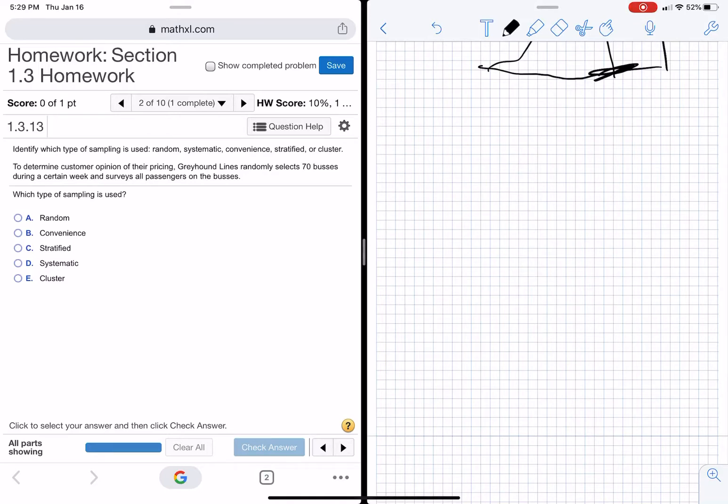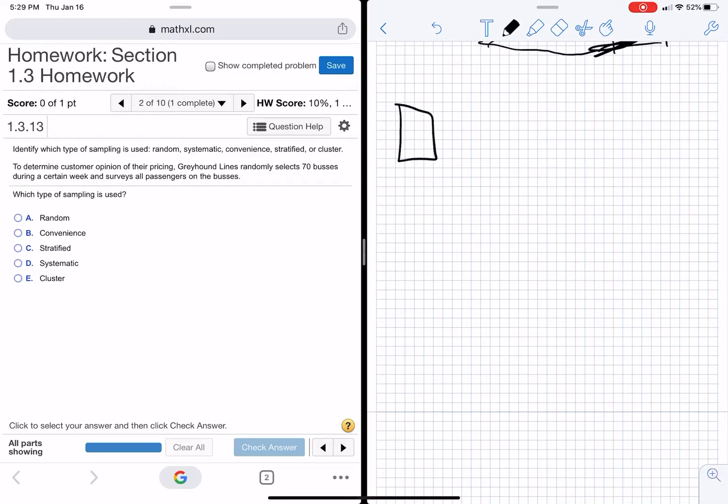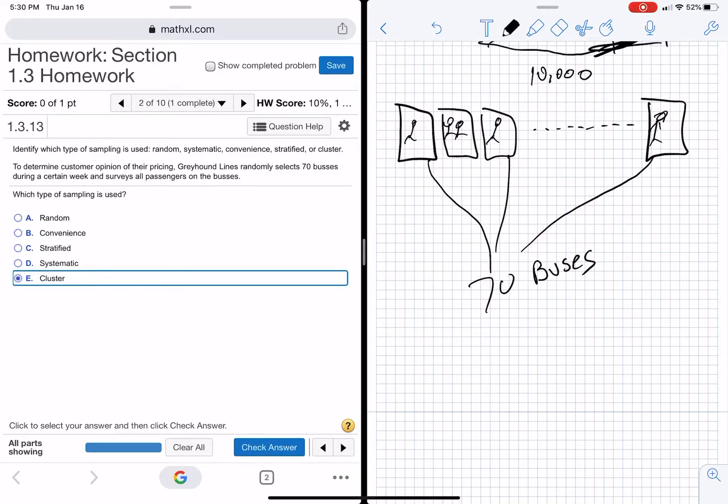Okay, they randomly select 70 buses during a week and survey all passengers on the buses. Okay, so you have to kind of think about this. Pictures sometimes help too. So this would be like bus 1, gray line. So all these are buses. Now, you don't know how many buses they have, but there's a lot of buses, and there's people on each of these buses, you know, multiple people. So what we did is, let's just say they have like 10,000 buses, and they're picking 70 buses. And then everybody in the bus. So this is a cluster, because you got grouped by your location of being in the bus, and then that whole bus got picked. So that's a cluster.